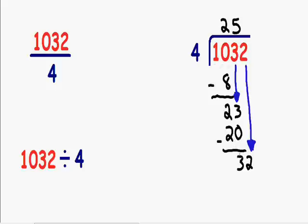4 goes into 32 exactly 8 times. 4 times 8 is equal to 32.